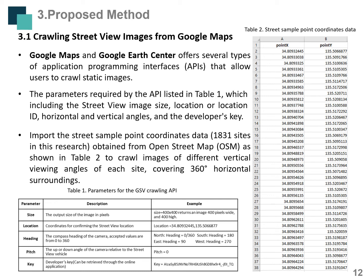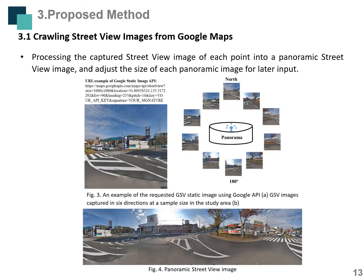The first step is crawling street-view images from Google Maps. Google Maps offers several types of APIs that allow users to request static images with parameters including image size, location or location ID, horizontal and vertical angles, and the developer's key. We import sample point coordinates obtained from OpenStreetMap to crawl images of different vertical viewing angles for each side. The captured street-view images of each point are then stitched into a panoramic street-view image and resized for later input.